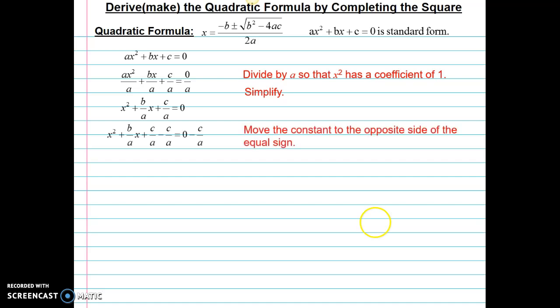Next I'm going to move the constant to the opposite side of the equal sign. Again this is just the process for completing the square. Next I'll simplify that. C over a minus c over a is zero. So I'm going to leave a space there for the complete the square process. And zero minus c over a is just minus c over a.